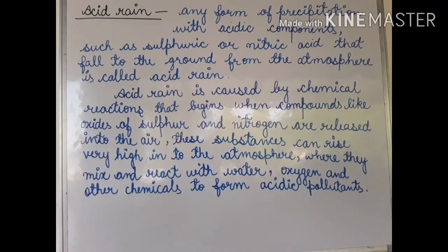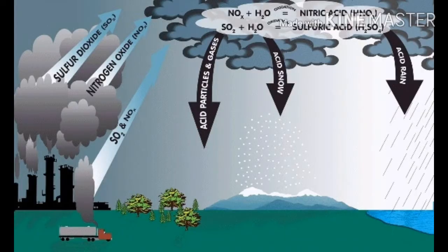Acid rain is caused by chemical reactions that begin when compounds like oxides of sulfur and nitrogen are released into the air. When we burn fossil fuels like petrol, diesel and coal — which contain small amounts of sulfur and nitrogen — they form oxides of sulfur and nitrogen. These substances can rise very high into the atmosphere, where they mix and react with water, oxygen and other chemicals to form acidic pollutants.